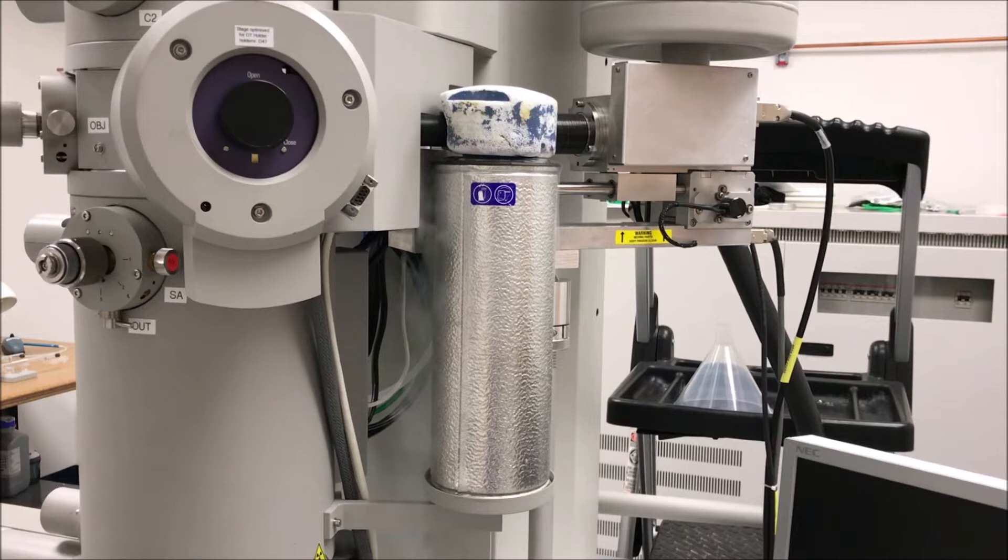On some instruments this is called an anti-contamination device. They all function the same way. It provides a surface for contaminants to stick to so they don't get on your sample, and it also keeps the pressure in your column down. What it does not do - and there's actually a YouTube video that incorrectly states this - the cold trap does not keep your specimen cold. It has nothing to do with specimen temperature. The only way to control specimen temperature is with a specialized holder.